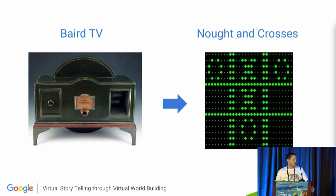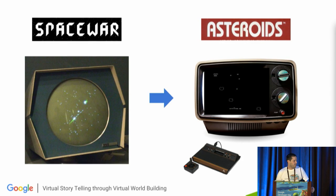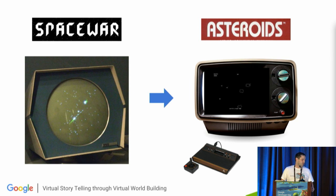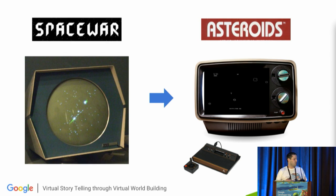This moves on to the TV, which added visual and audio brought together. We developed our first video game, called Knots and Crosses, back in the early 40s. Moving on, the second technical first video game was called Space War. The problem with Space War is it was completely tied to its hardware — it didn't scale.